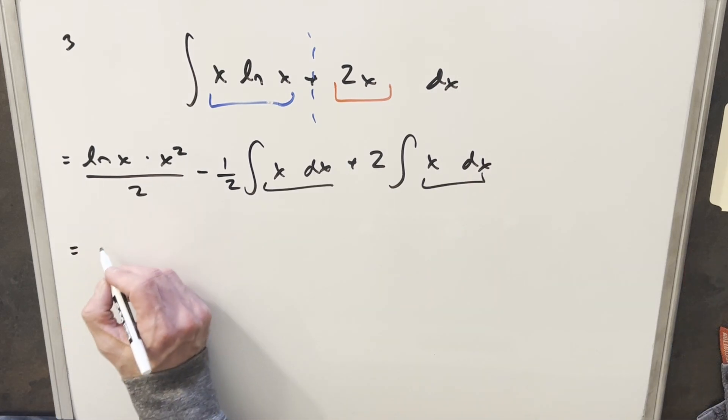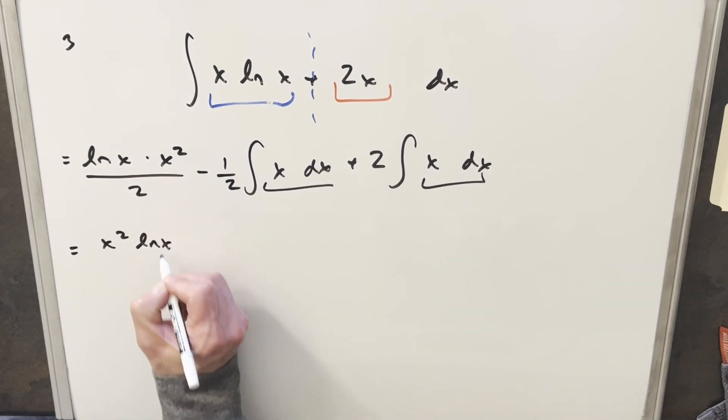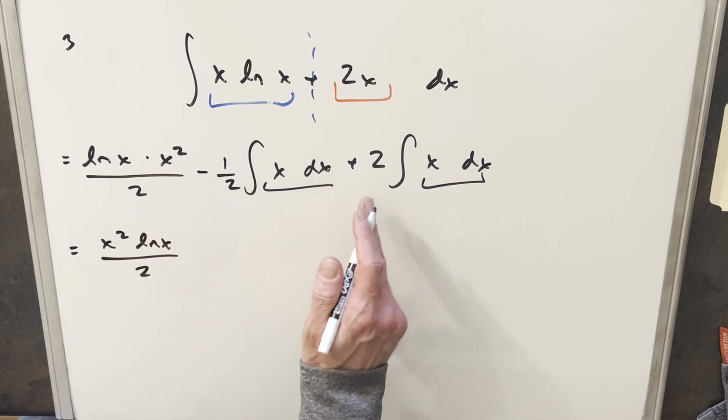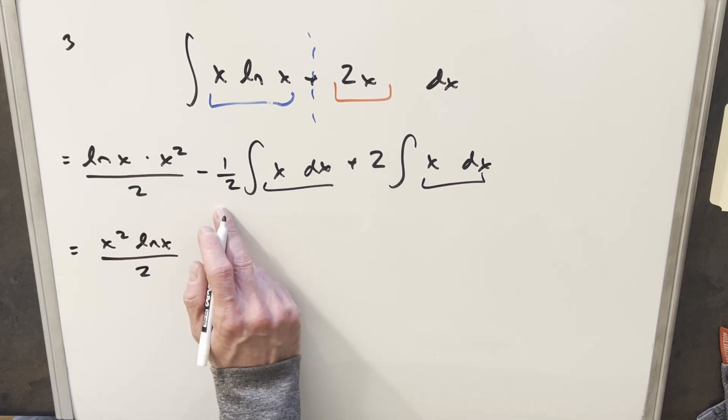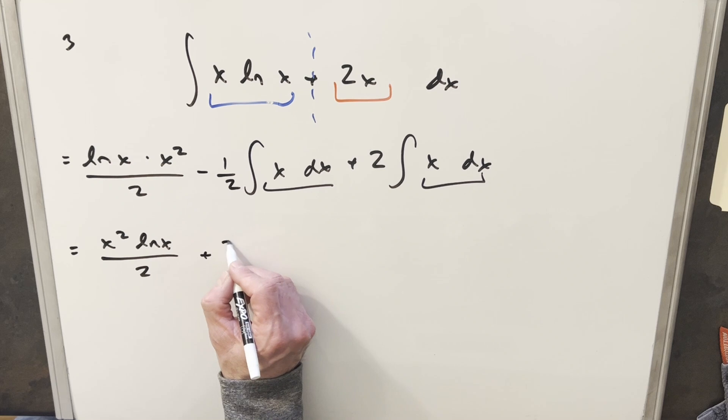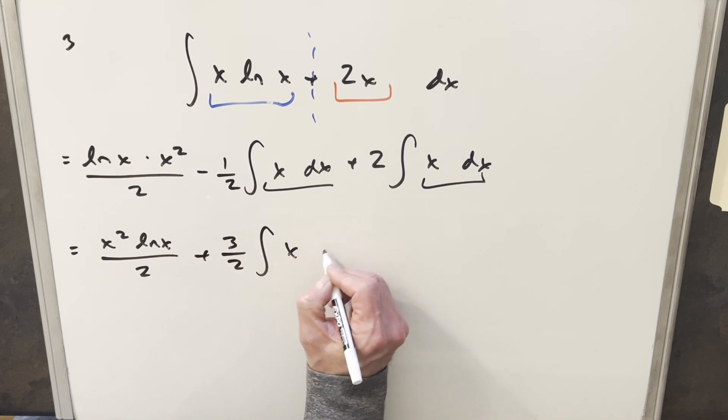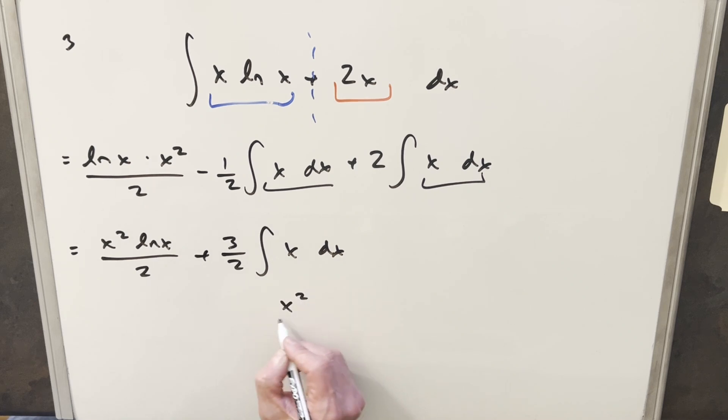So what I'll do is bring this first piece down. I'm actually going to change the order, just because I like it better this way. So we'll write this, then if I combine these two integrals, 2 minus 1 half, that's going to give me plus 3 halves, integral of x dx. But the integral of this is going to be just x squared over 2.